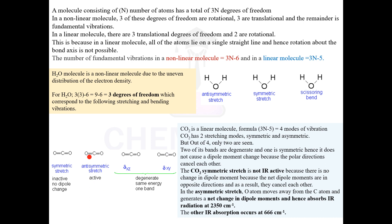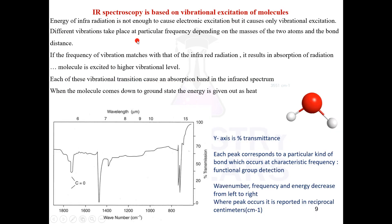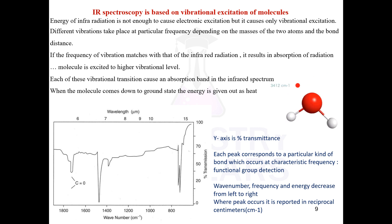Degrees of freedom: if you have N number of atoms, there are total 3N degrees of freedom giving different translational, rotational, and vibrational modes. IR spectroscopy is based on vibrational excitation of molecules. Taking the example of H₂O — when different frequencies are absorbed, look at the change in the vibration. The same molecule can absorb different frequencies and exhibit different vibrations. Energy of infrared is not enough to cause electronic excitation — it causes only vibrational excitation.